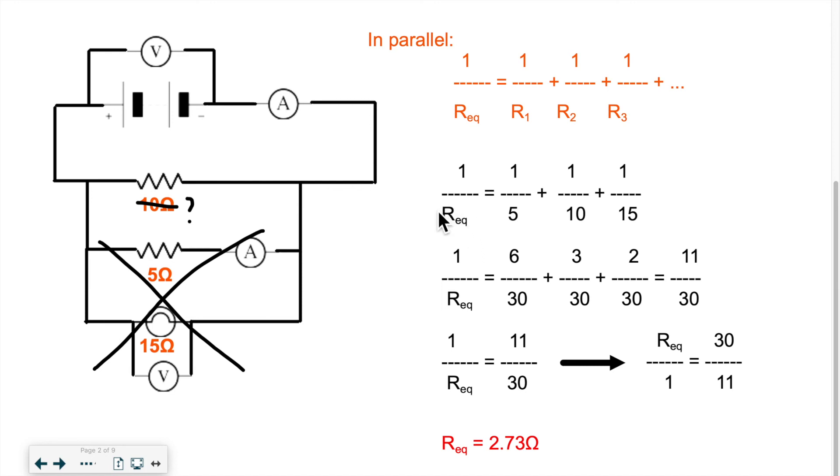And that's not what we want, we want the actual value of the total resistance. So what we get essentially is this, 1 over R equivalent is equal to 11 over 30. But again, that's not what we want, we don't want 1 over R, we just want R.